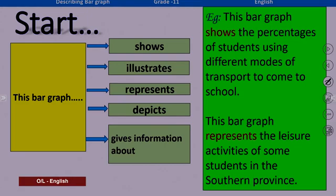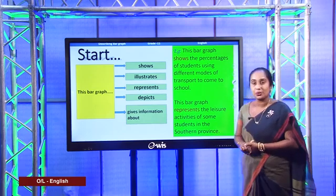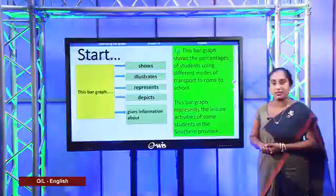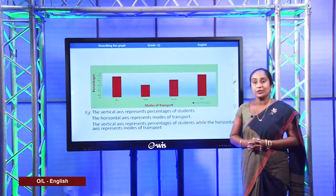Here are some examples. 'This bar graph shows the percentages of students using different modes of transport to come to school.' Second example: 'This bar graph represents the leisure activities of some students in the southern province.' Here you can see 'this bar graph shows' and 'this bar graph represents' — these words are often given in the question itself or in the graph, so don't worry about choosing them.